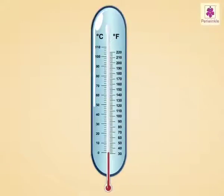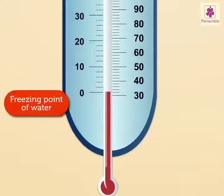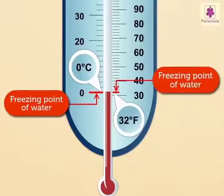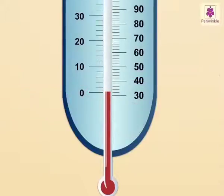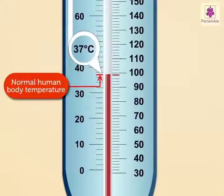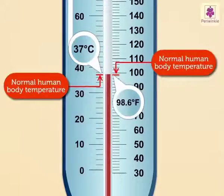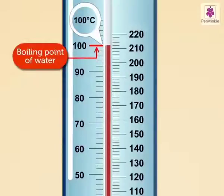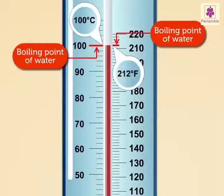Kids, did you know — the freezing point of water on the Celsius scale reads 0 degree Celsius, and on the Fahrenheit scale it reads 32 degree Fahrenheit. The normal human body temperature on the Celsius scale reads 37 degree Celsius, and on the Fahrenheit scale it reads 98.6 degree Fahrenheit. The boiling point of water on the Celsius scale reads 100 degree Celsius, and on the Fahrenheit scale it reads 212 degrees Fahrenheit.